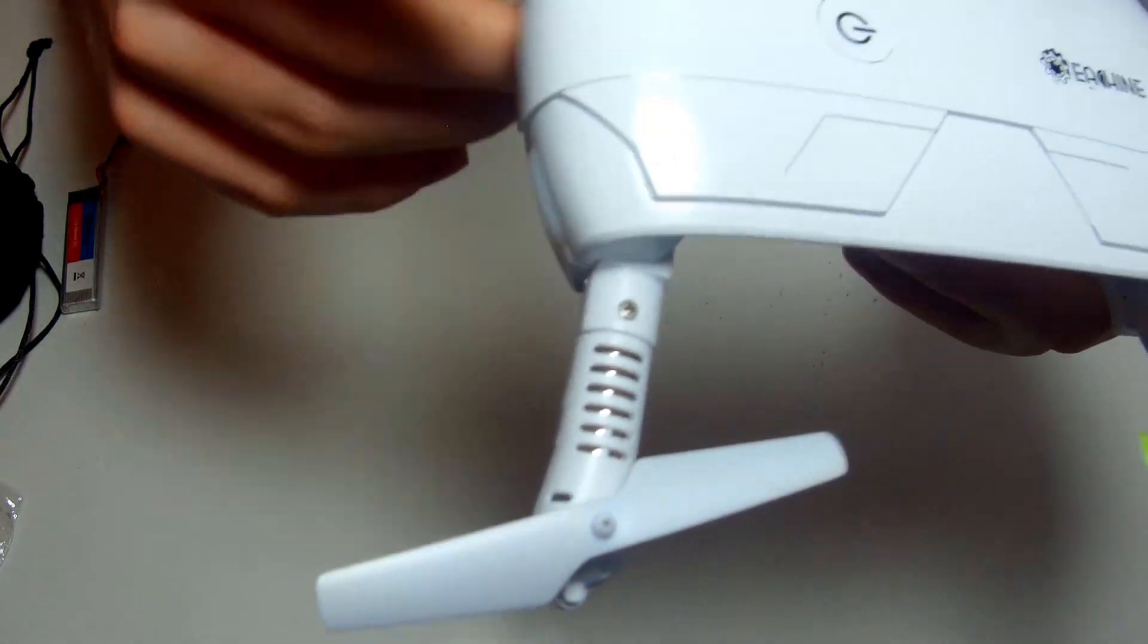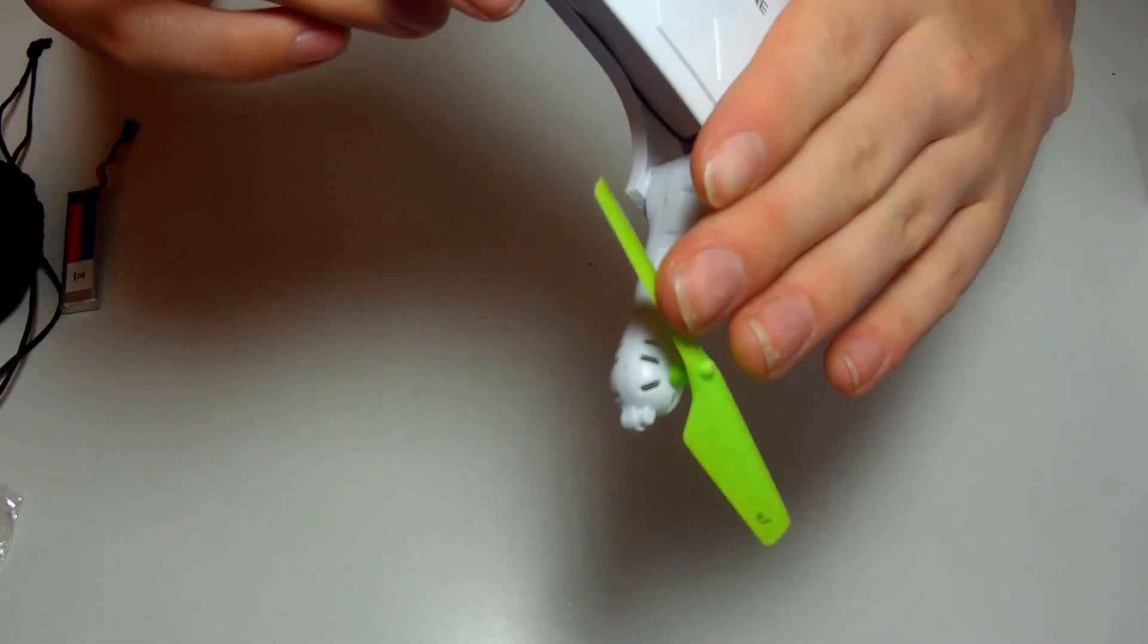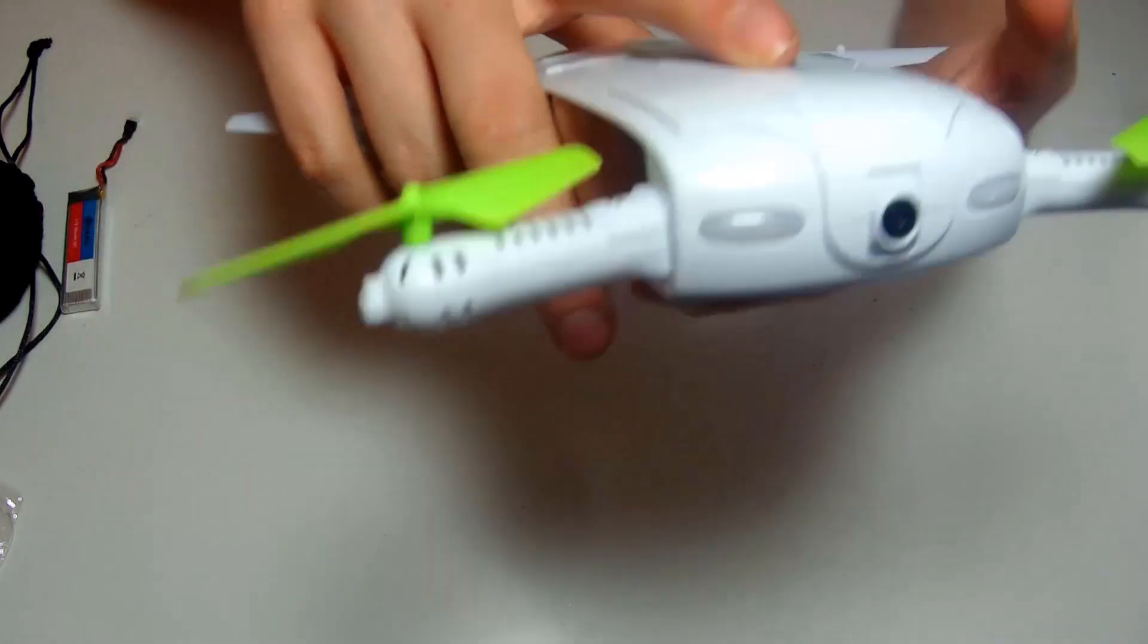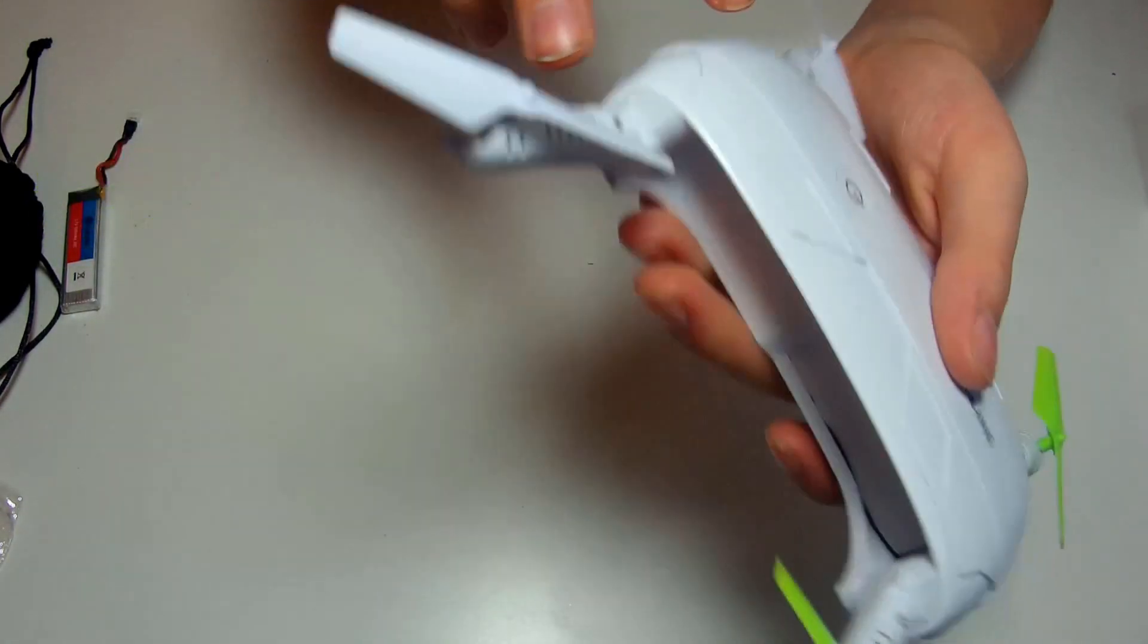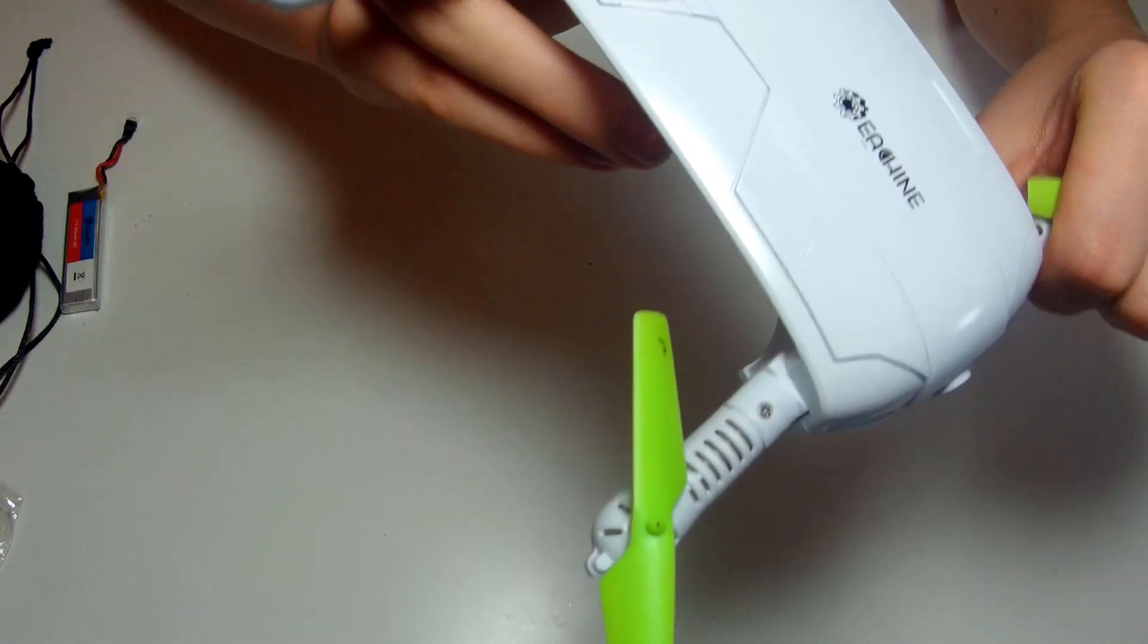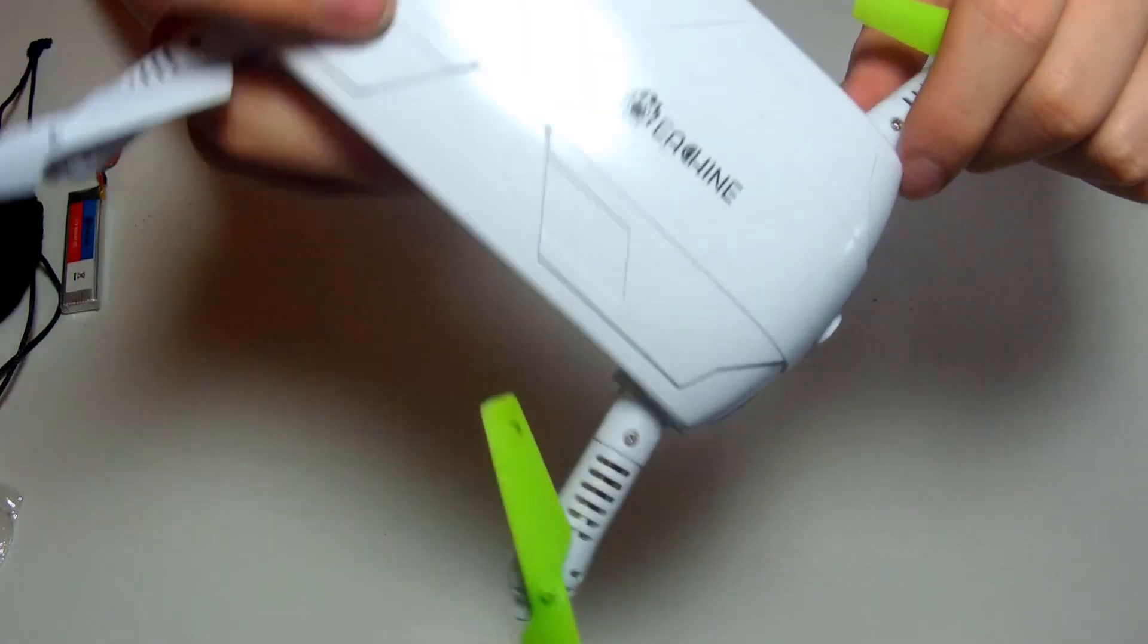Having the different color props makes it easier to see which one's the front. Another feature that makes it easier to see is you've got the LEDs on the front and on the rear, which make it easier to tell when it's flying away from you which orientation the quad is in.